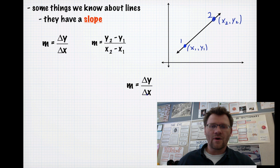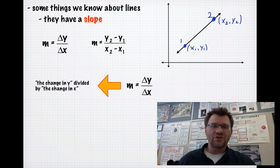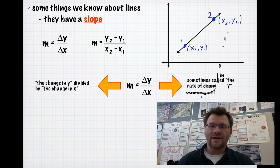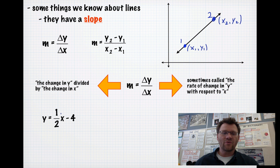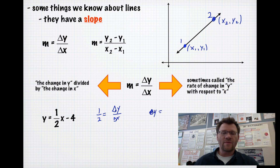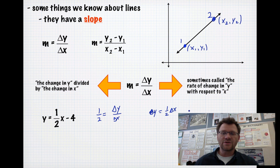Knowing that m equals delta y over delta x — the change in y divided by the change in x — another way to look at that is it's sometimes called the rate of change in y with respect to x. For the equation y equals one-half x minus 4, the one-half is equal to your slope, delta y over delta x. If we isolate delta y, that equals one-half times delta x. This says that your change in y is dependent on your change in x — it's going to be multiplied by one-half.